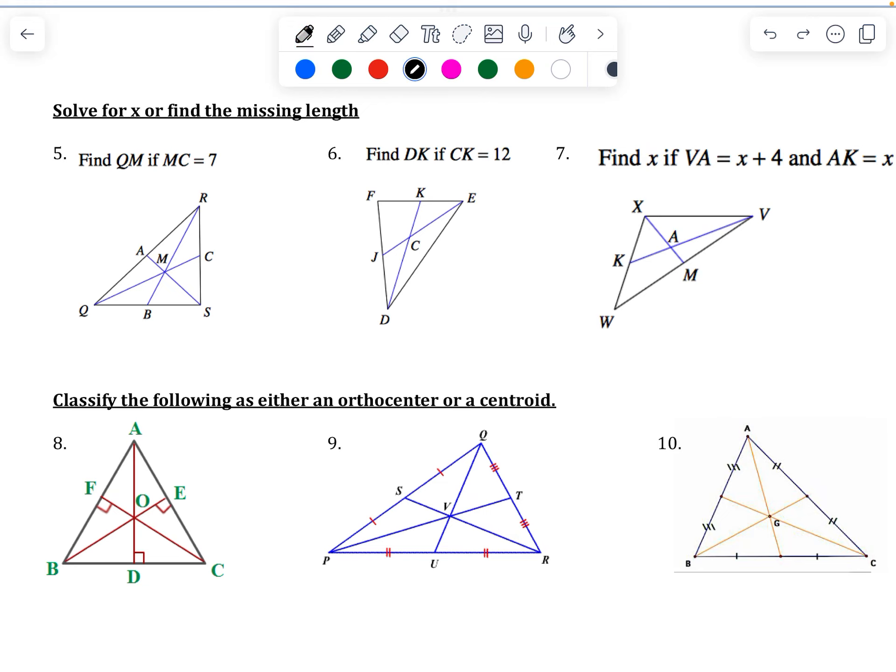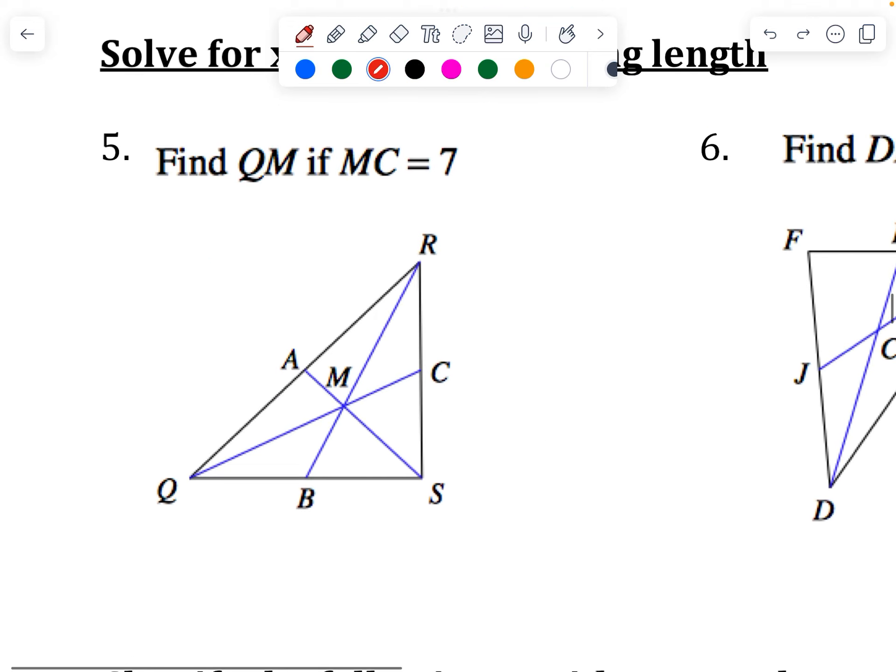I want to find the missing length. So if MC is 7, this is the short part right here of this segment. Let me make this a little bit smaller, and I can highlight. This is 7, so I need to find out what is QM, the longer part.